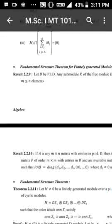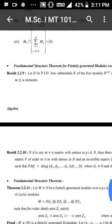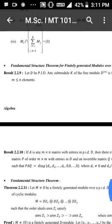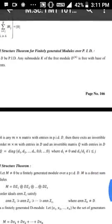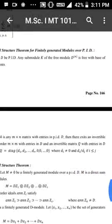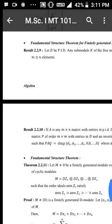Result: Let D be a principal ideal domain. Any submodule K of a free module D raised to n is free with a basis of at most n elements.